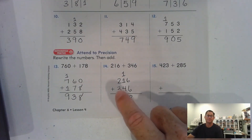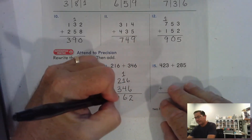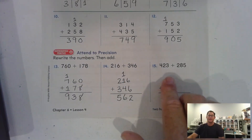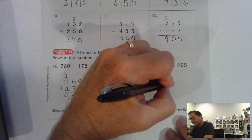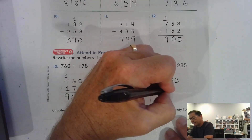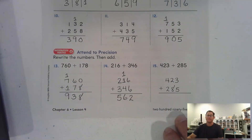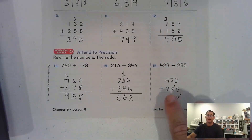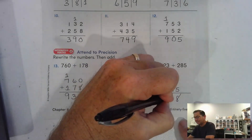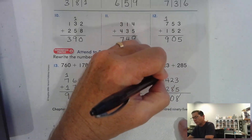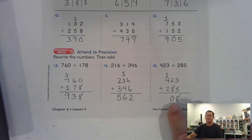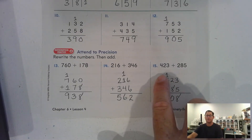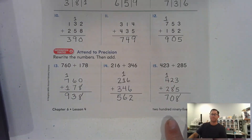We don't have to regroup the tens. Three hundred plus two hundred is five hundred. Number fifteen: four hundred twenty-three plus two hundred eighty-five. Five and three is eight ones. Eight tens and two tens is ten tens — regroup that as one hundred and zero tens. Four hundred plus two hundred is six hundred, plus the regrouped hundred is seven hundred.